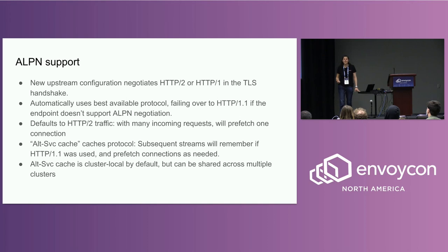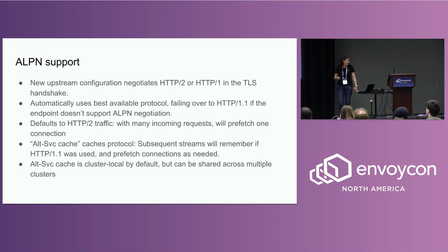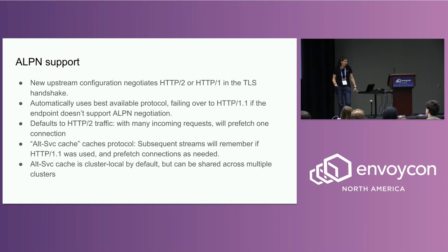The first thing we did is add ALPN support. We added a new upstream configuration that lets you negotiate whether you use HTTP2 or HTTP1 as part of the TLS handshake. There's no latency penalty — this is done inline with just a couple extra bytes on the wire. It'll automatically use the best available protocol. If you're talking to an older endpoint on the internet that doesn't support ALPN, it just fails over to using HTTP1.1, so you're pretty much guaranteed to get your traffic through.